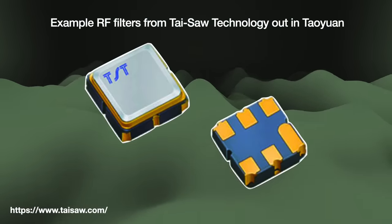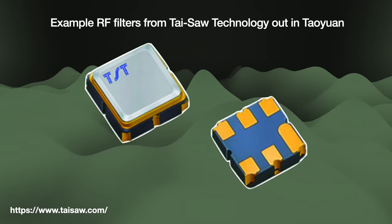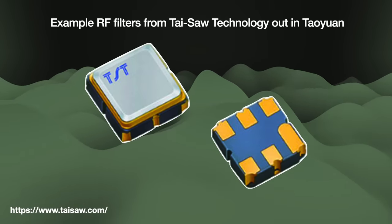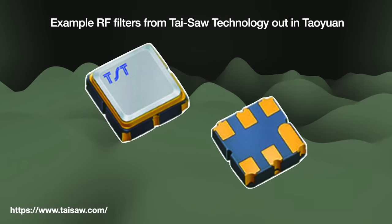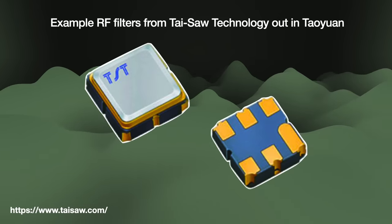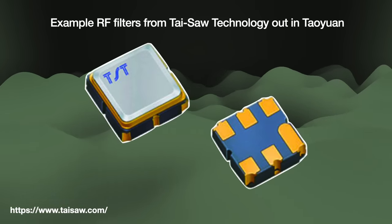So that is what the RF filter is supposed to do — but how does it go about doing that job? There are many devices, but the RF filters inside our modern smartphones are SAW and BAW filters. They dominate the market.